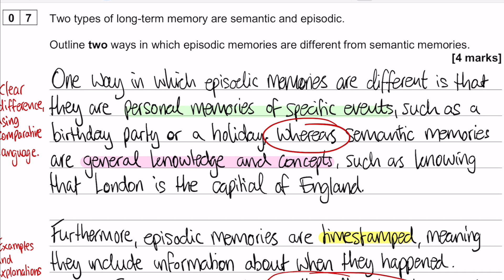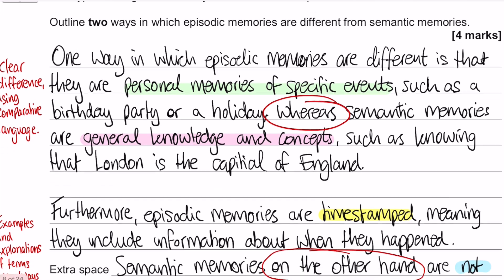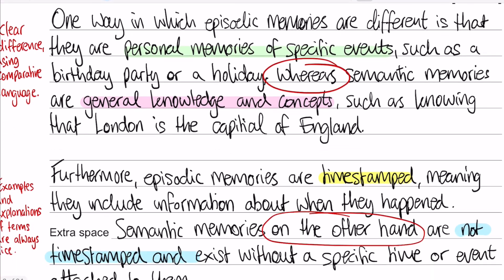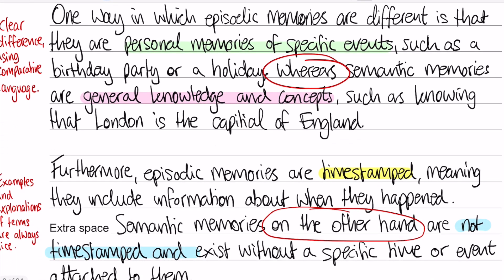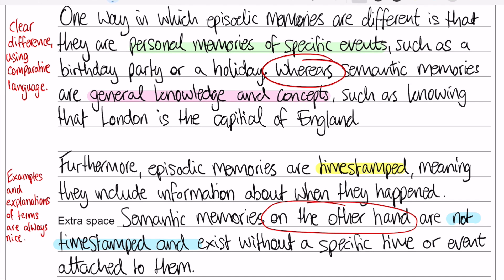My second difference: episodic memories are time-stamped, meaning they include information about when they happened or contextual information. Semantic memories, on the other hand, are not time-stamped and exist without a specific time or event attached to them.